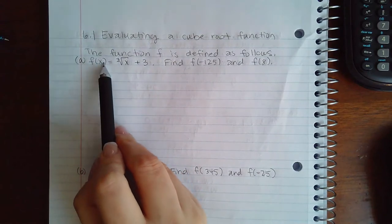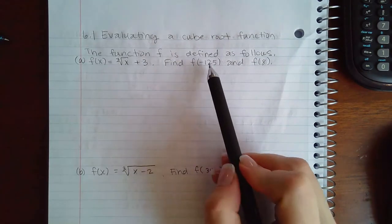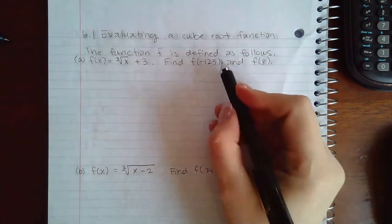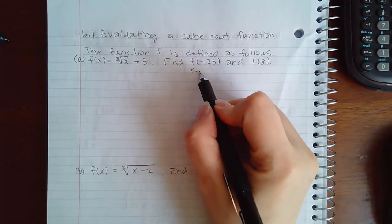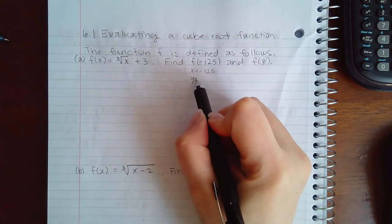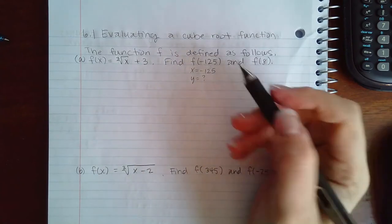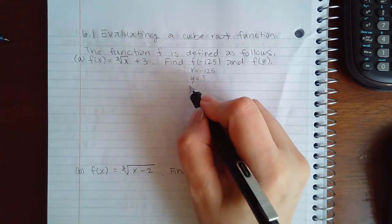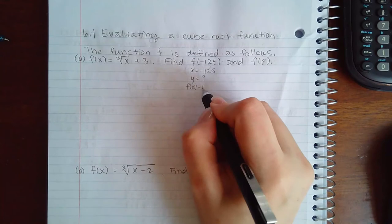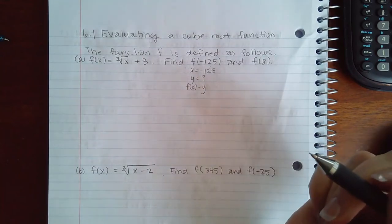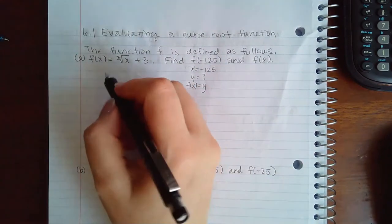Notice it was f(x) and now it's f(-125). What that means is the x value is -125 and they want to know what the y value is. We already know that f(x) is just a fancy way of saying the y value. So what we need to do is plug in this -125.